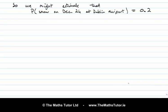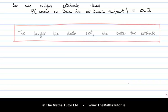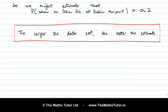A very important point about this method is that the larger the data set we have, the better the estimate. In the example above, we used data from 50 years to estimate the probability of snow at Dublin Airport on Christmas Eve. If instead we'd had data from only five years, then our estimate would have been much less reliable. A small data set gives a poor estimate of the probabilities, while a large data set is likely to give a much more accurate estimate.